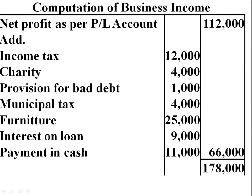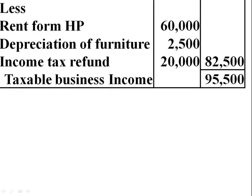Now the answer: Net profit as per P&L — Rs. 1,12,000. Add inadmissible expenses debited in the P&L: income tax Rs. 12,000, charity Rs. 4,000, provision for bad debt Rs. 1,000, municipal tax Rs. 4,000, furniture Rs. 25,000, interest on loan Rs. 9,000, payment in cash Rs. 11,000 — total additions Rs. 66,000. Grand total Rs. 1,78,000. Less: rent from house property Rs. 60,000, depreciation Rs. 2,500, income tax refund Rs. 20,000. Taxable business income is Rs. 95,500.